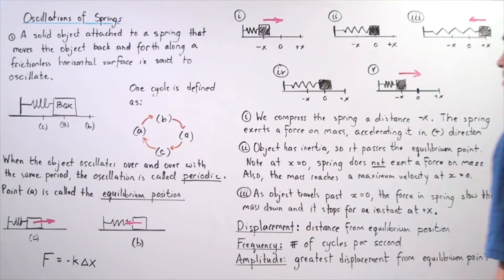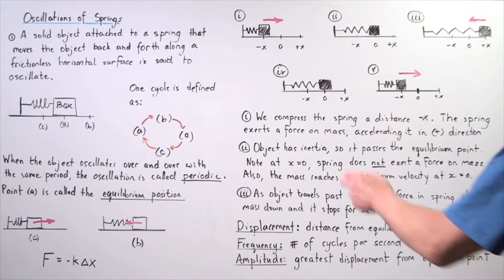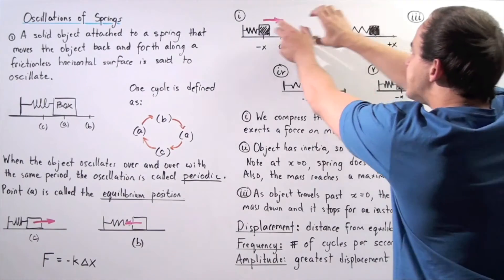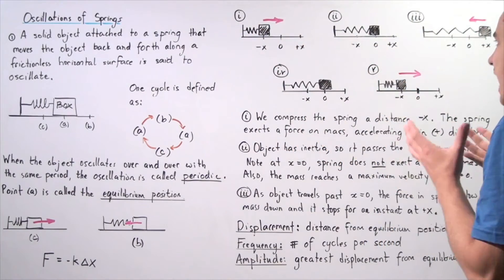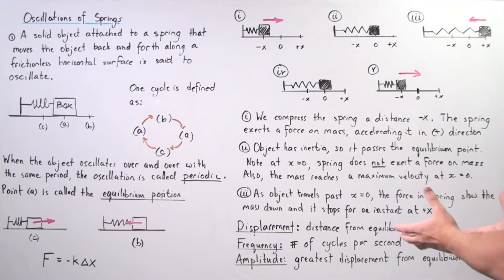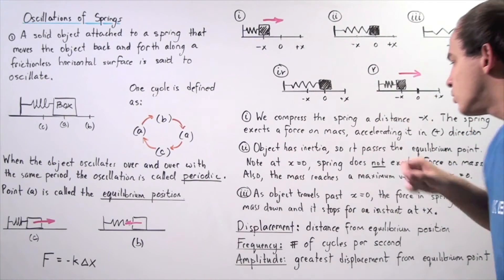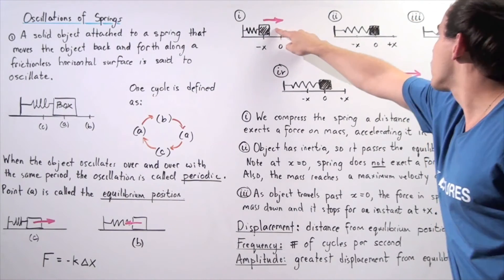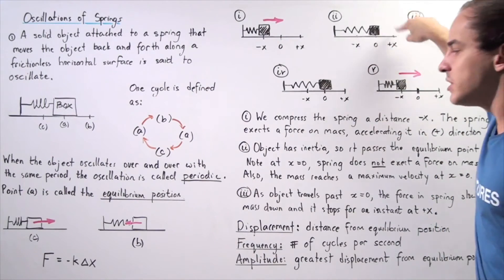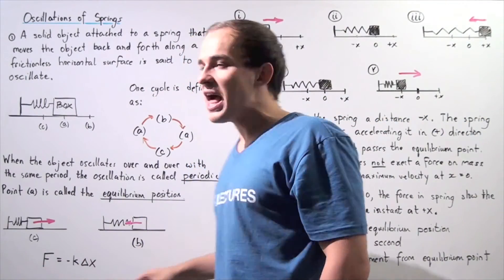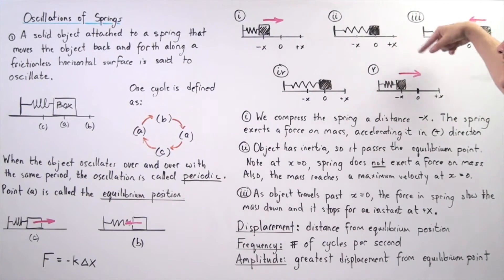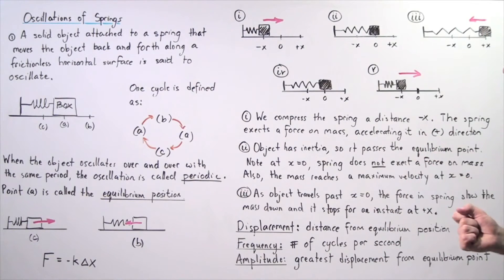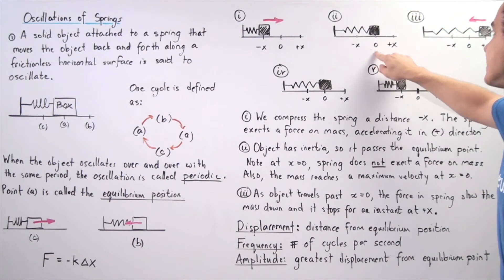At position two, the object has inertia so it passes the equilibrium point. As the object travels toward position two and reaches the equilibrium position, that inertia carries it past that point. At the equilibrium point, x equals zero, so the spring does not exert a force on the mass — that's why no force arrow is drawn. At position two, displacement is zero, force is zero, and acceleration is zero. However, the mass reaches its maximum velocity at this position.